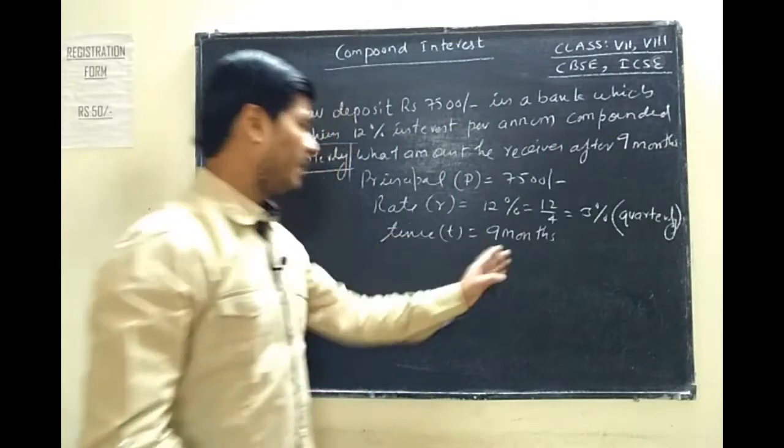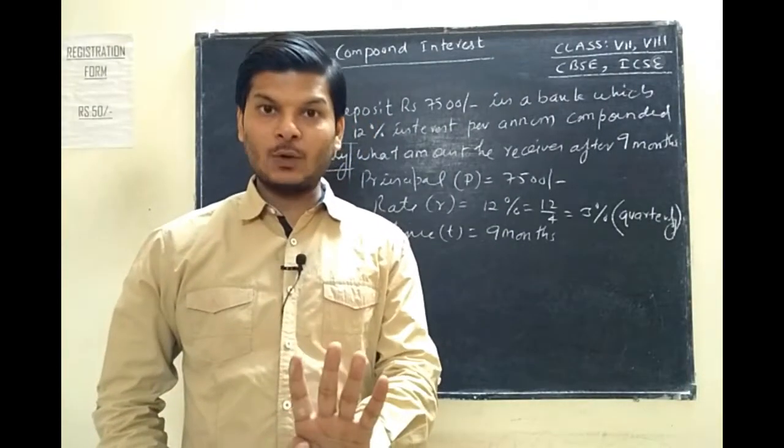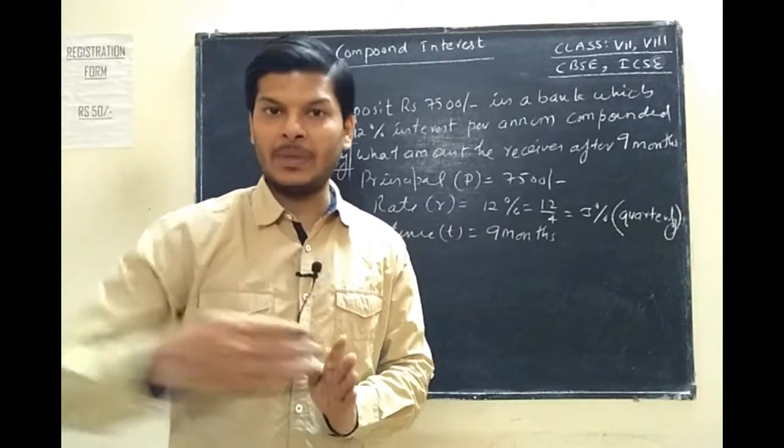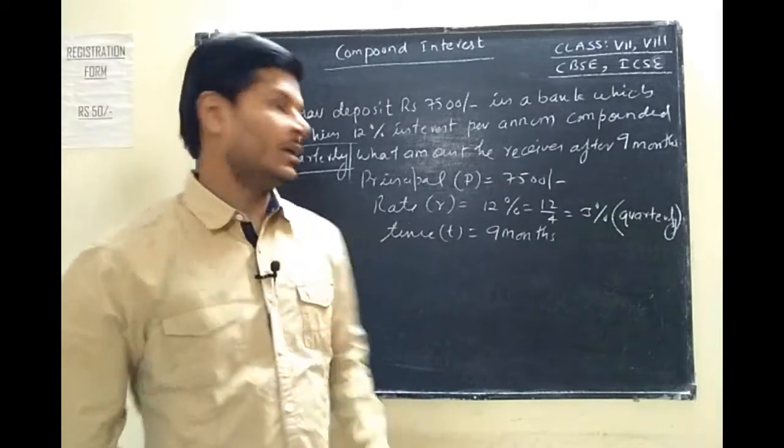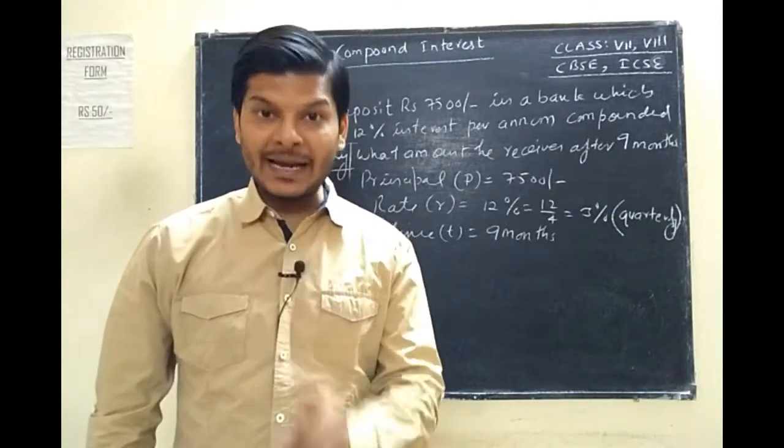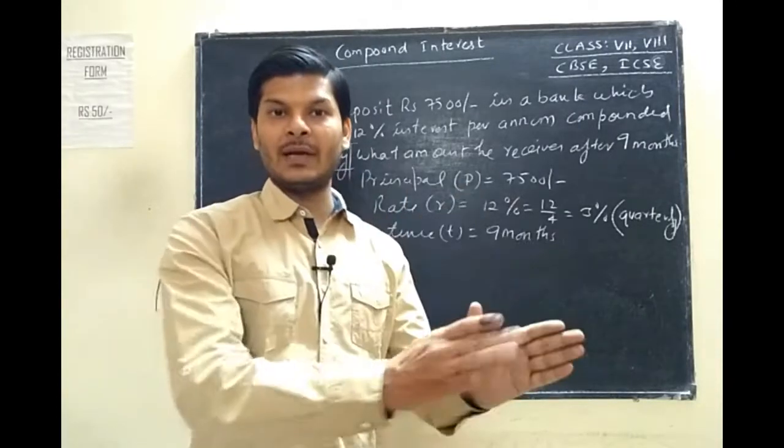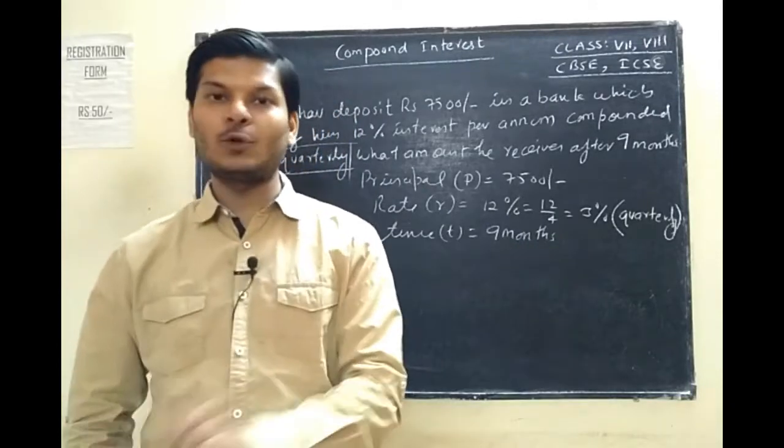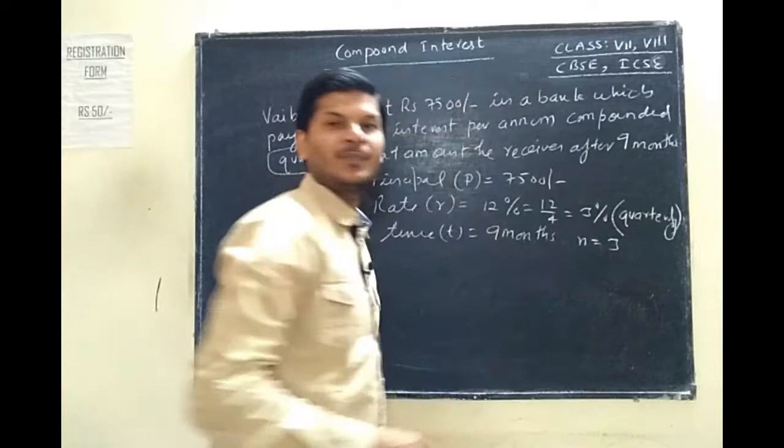For quarterly time, since one year has 4 quarters and each quarter is 3 months, we calculate how many 3-month periods are in 9 months. Three months, then 3 months, then 3 months—three times makes 9 months, so the value of n becomes 3.